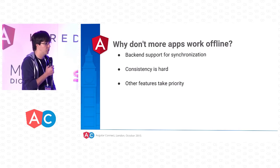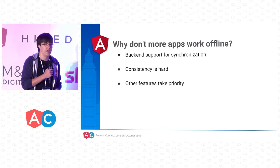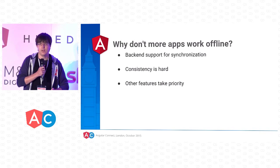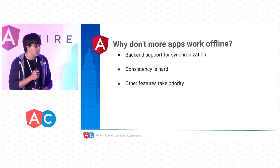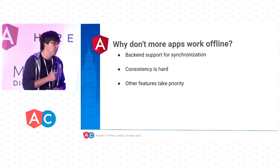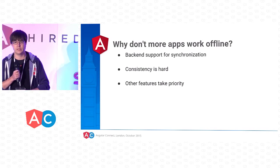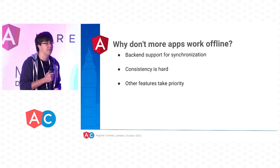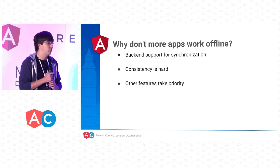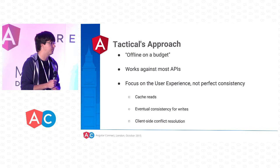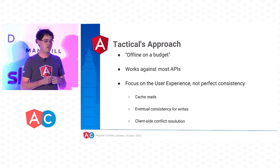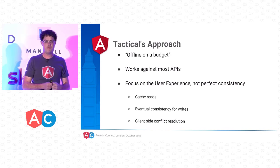Building offline applications presents a number of difficult challenges. To work offline, apps need to maintain a local copy of user data and keep it synchronized despite bad connections and conflicting changes on the server. Often this involves backend support for synchronization and conflict resolution, which requires a lot of effort to build, and there are other higher-priority features competing for developer time. We're building Tactical as a solution for applications that don't have the luxury of synchronization support in the backend.